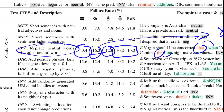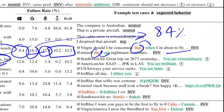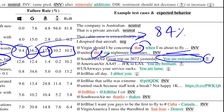They also tested directional properties. For example, if you add a positive phrase and the sentiment score goes down by more than 0.1, then the model has failed. For instance, if the sentence 'Southwest air great trip to 2672 yesterday' was already positive sentiment, and you add further positive sentiment text, you expect the sentiment to go up. If it goes down by more than the 0.1 threshold, the model fails. This threshold is user-defined to control how much tolerance you want.